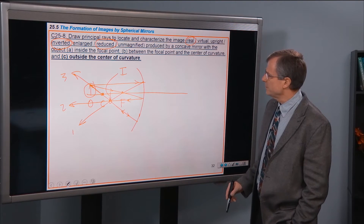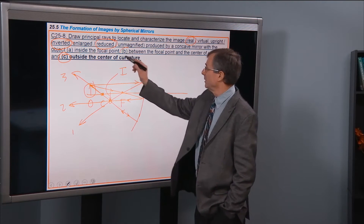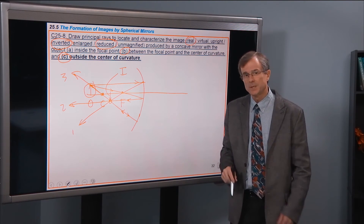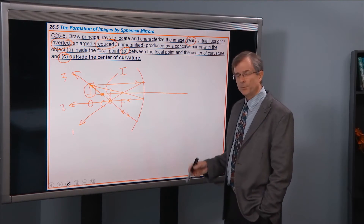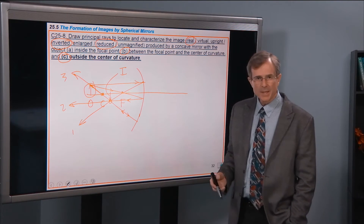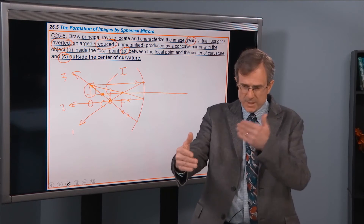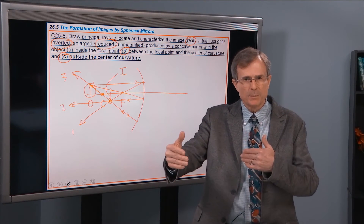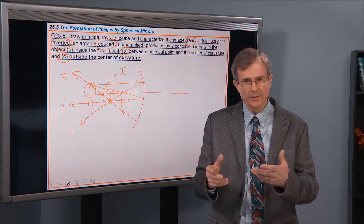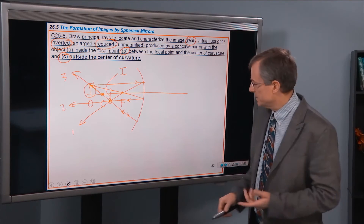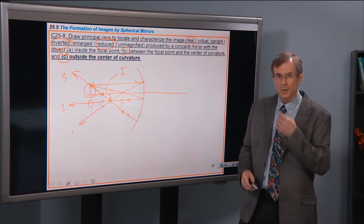So the only difference between case C, where we're outside the center of curvature, and case B, where we're between the focal point and the center of curvature, is just the fact that the image is now reduced instead of enlarged. And we saw that in the video — when I was standing right at the center of curvature, my image in the mirror was about the same size as my actual image, so the magnification is 1 — actually minus 1 because it was inverted. But then beyond that center of curvature, you saw an image that became smaller and smaller.